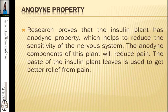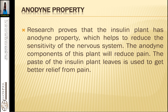It has anodine properties. Research proves that the insulin plant has anodine properties which help reduce the sensitivity of the nervous system. So we can use it for hypertensive and hyperactive children, children with autoimmune diseases, autism, and children having problems with their nervous system — be it Parkinson's disease, multiple sclerosis, galleric disease, or epilepsy. The paste of the insulin plant leaves is used to get better relief from pain.